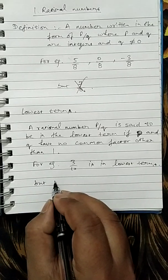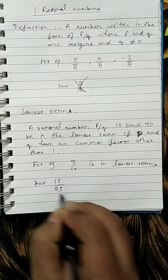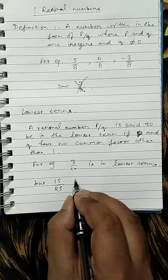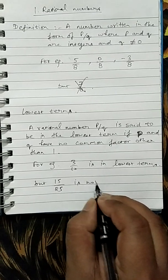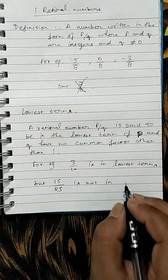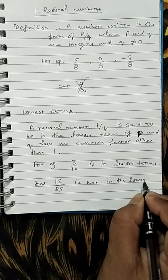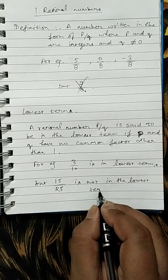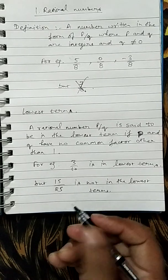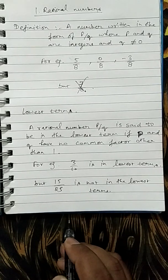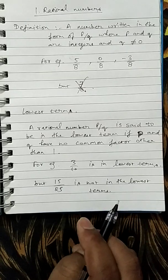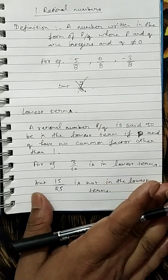But 15 upon 25 is not in the lowest term, as 15 and 25 can easily be divided by 5.